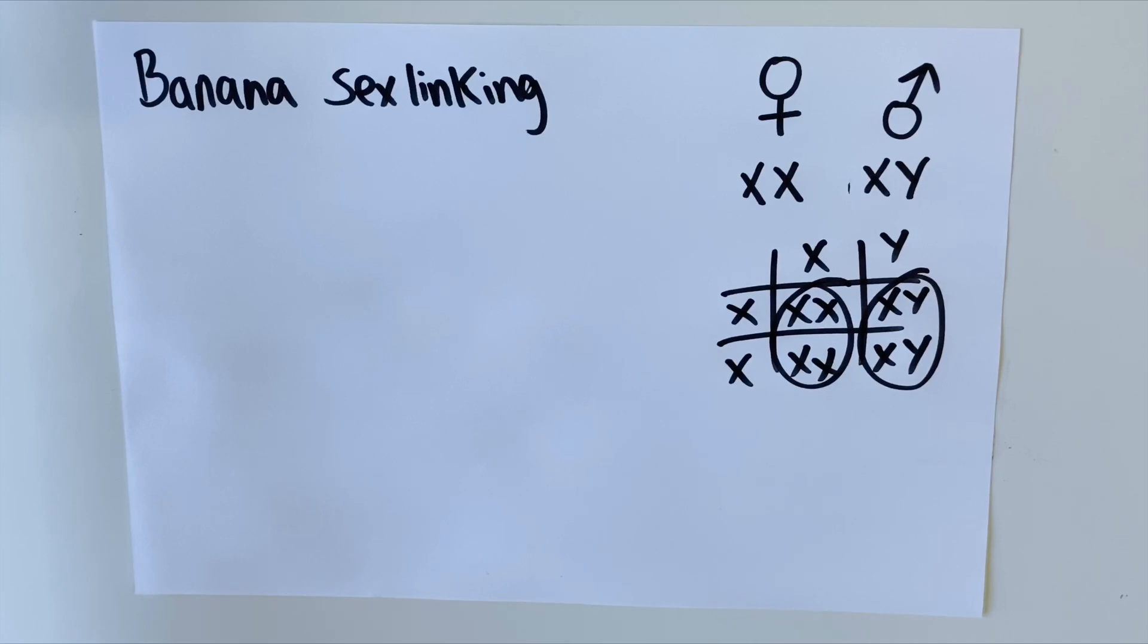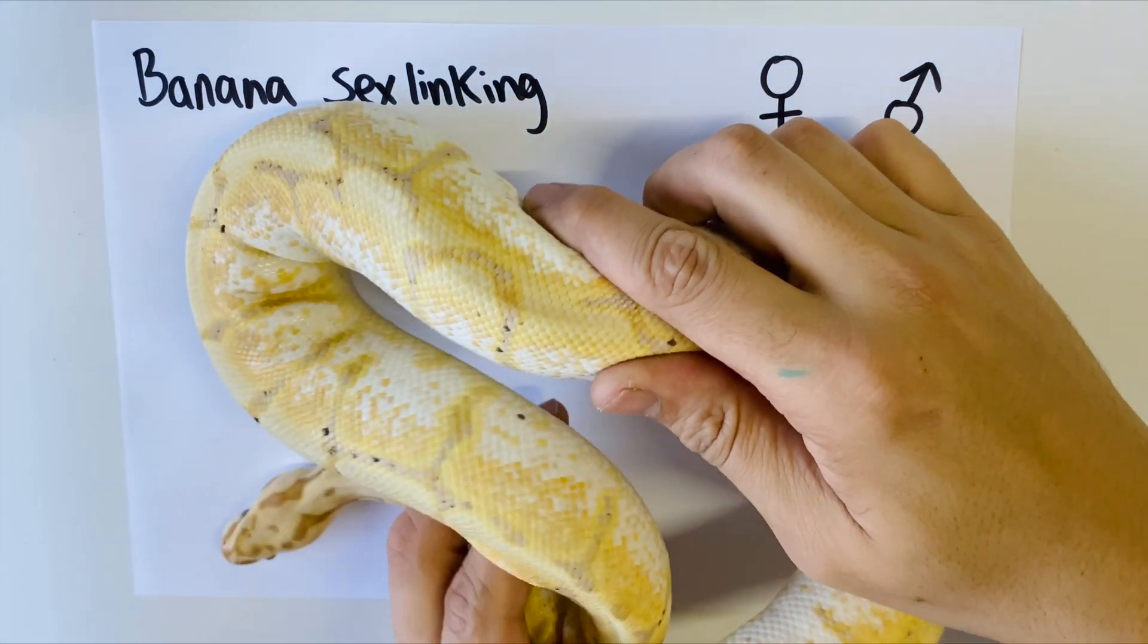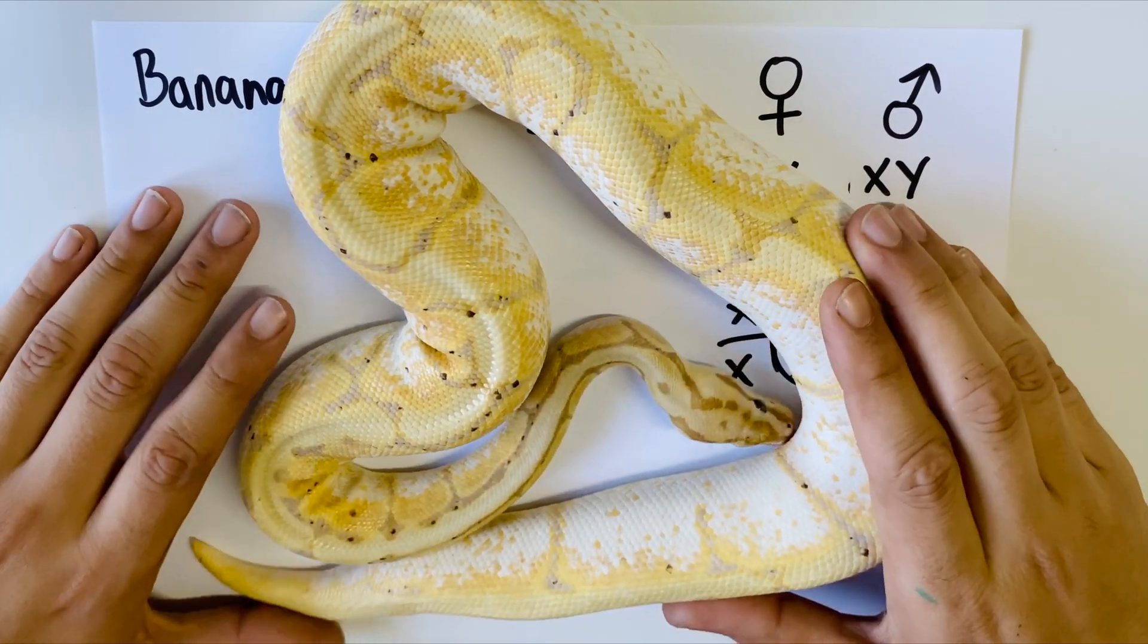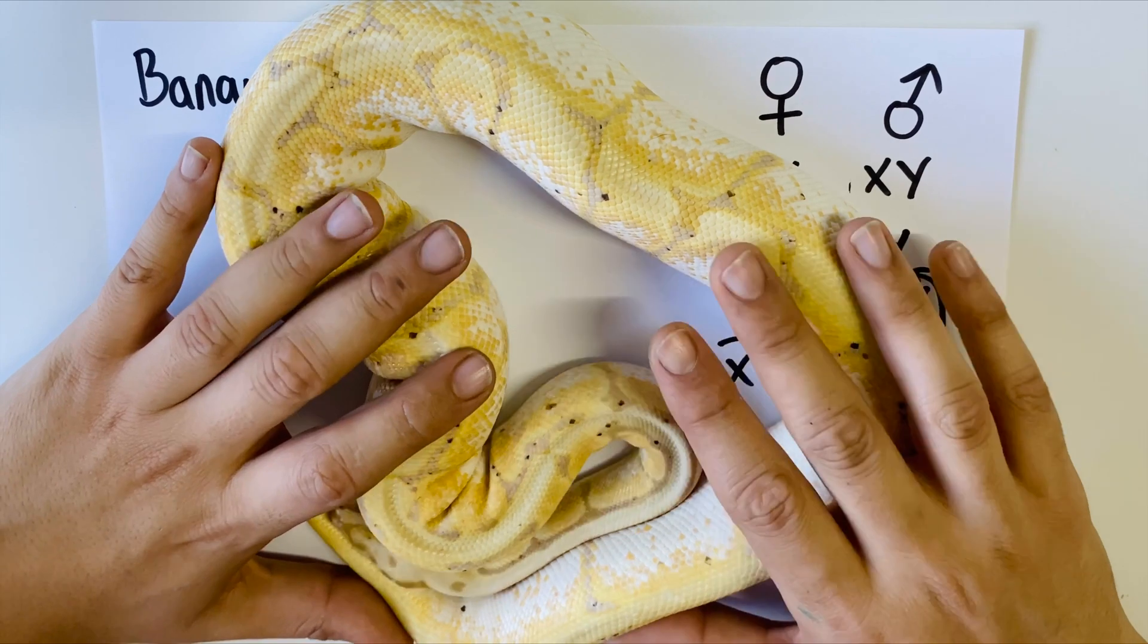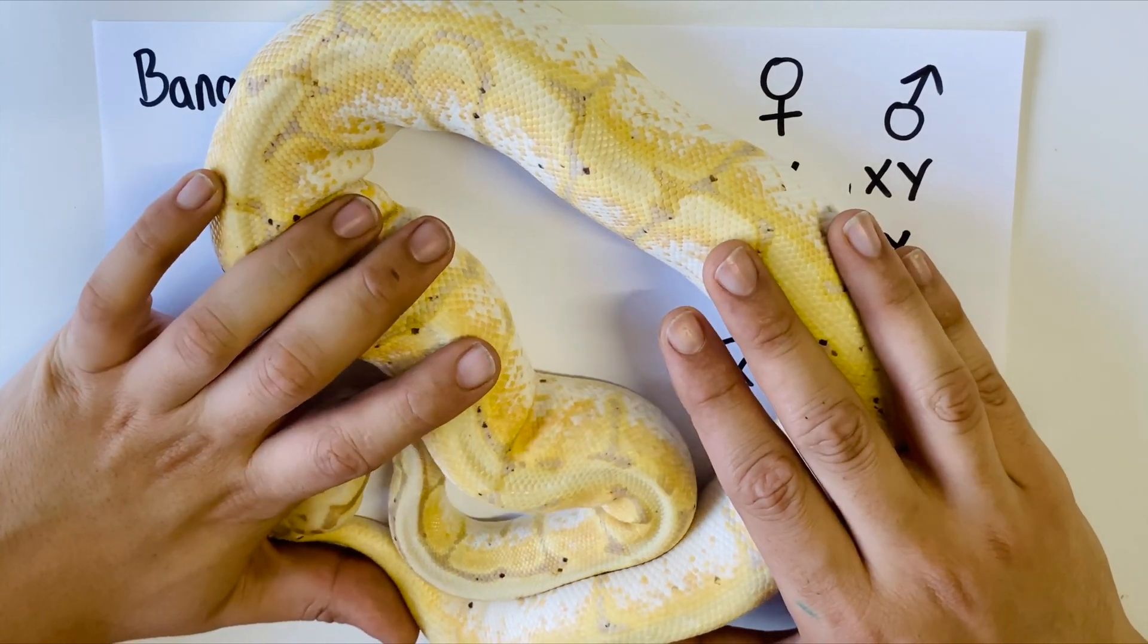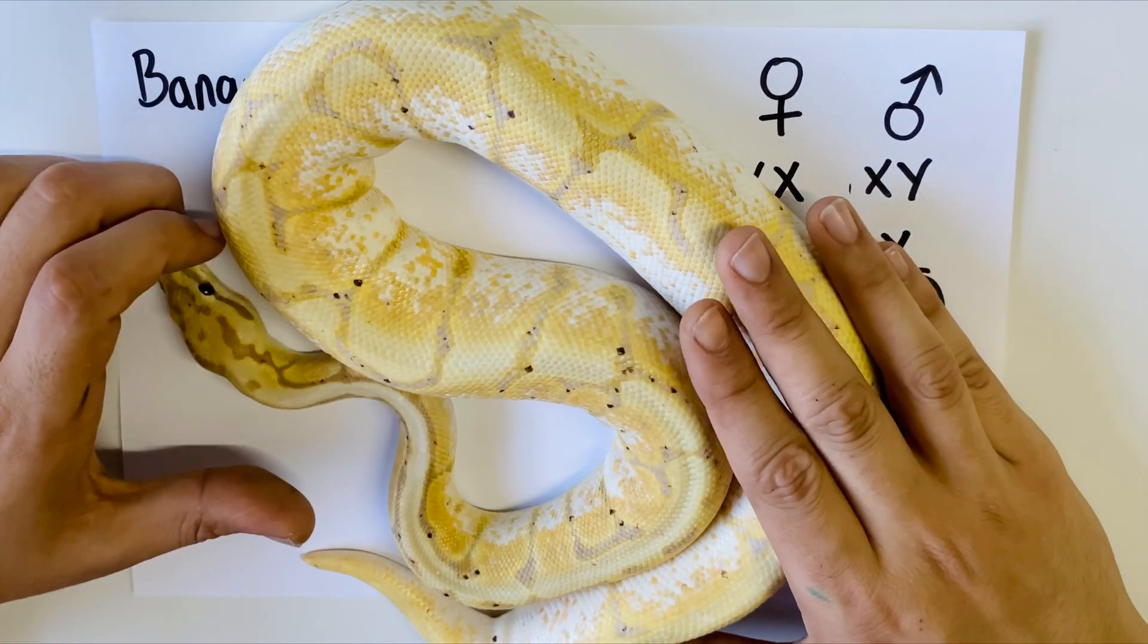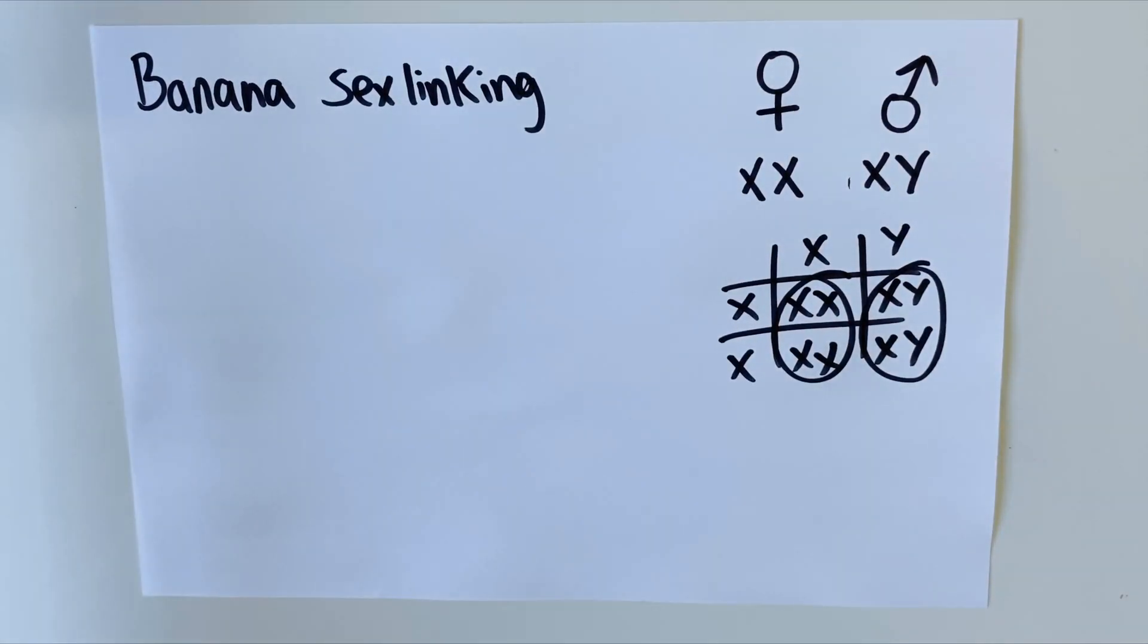Now we understand simple basic sex determination in ball pythons. We can begin to look at why the banana ball python mutation is linked to sex. Why is it that some animals, like this boy right here, why is it that this male banana will produce almost exclusively banana offspring that are also male? Why is he referred to as a male maker? The banana gene originated in a female ball python, a wild-caught female from West Africa who was carrying the gene for banana.